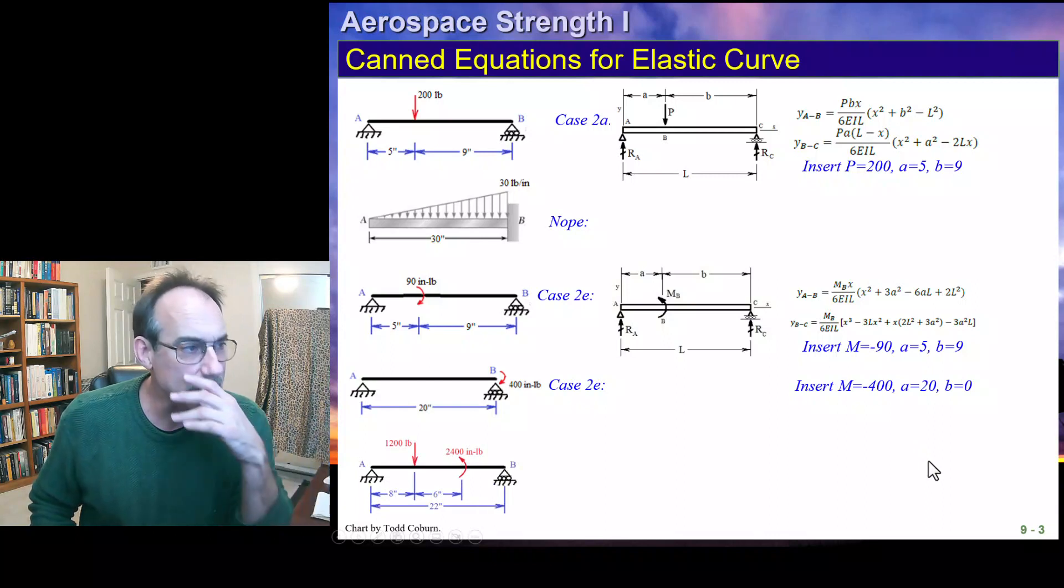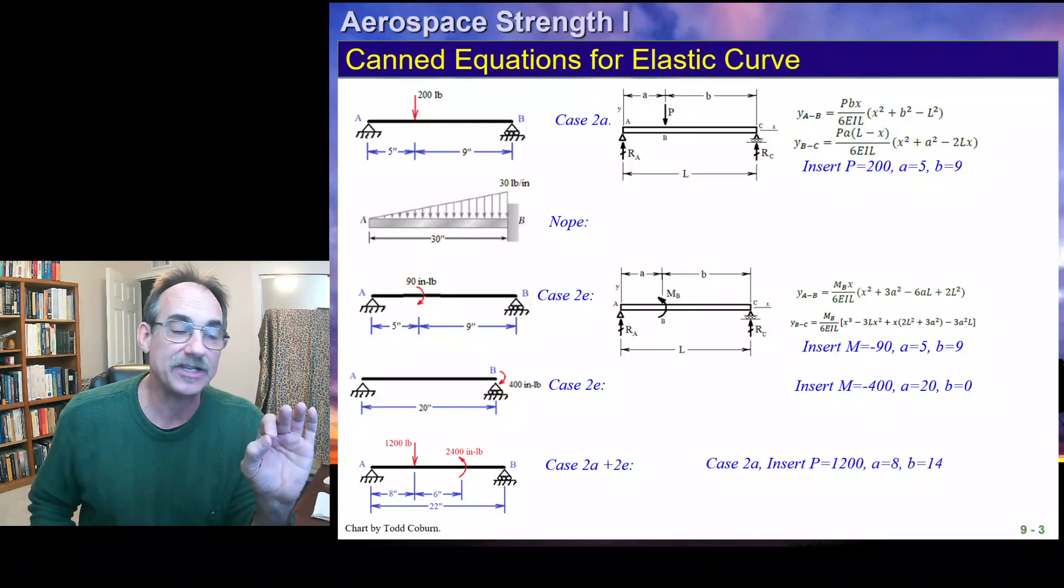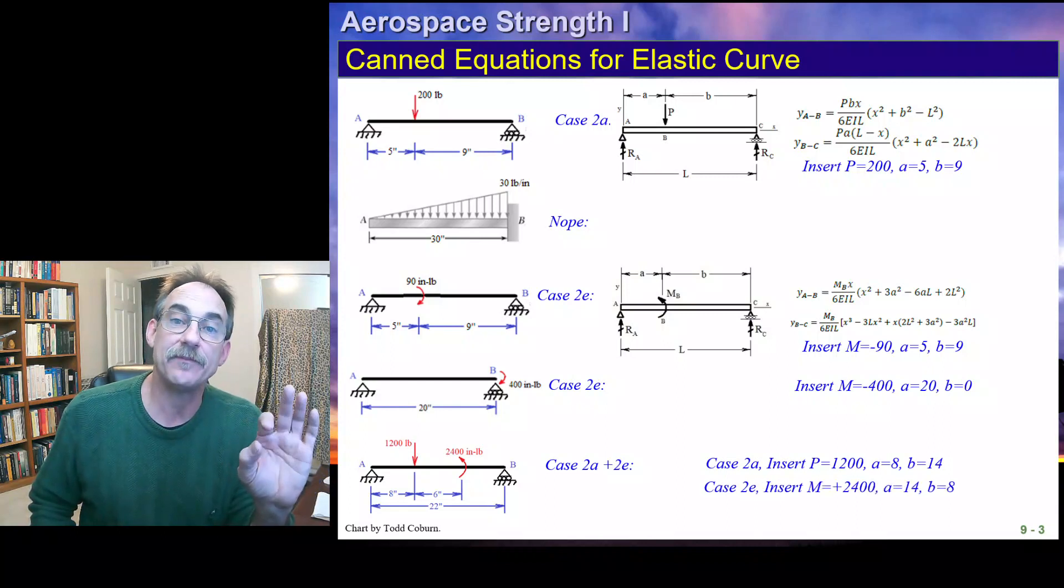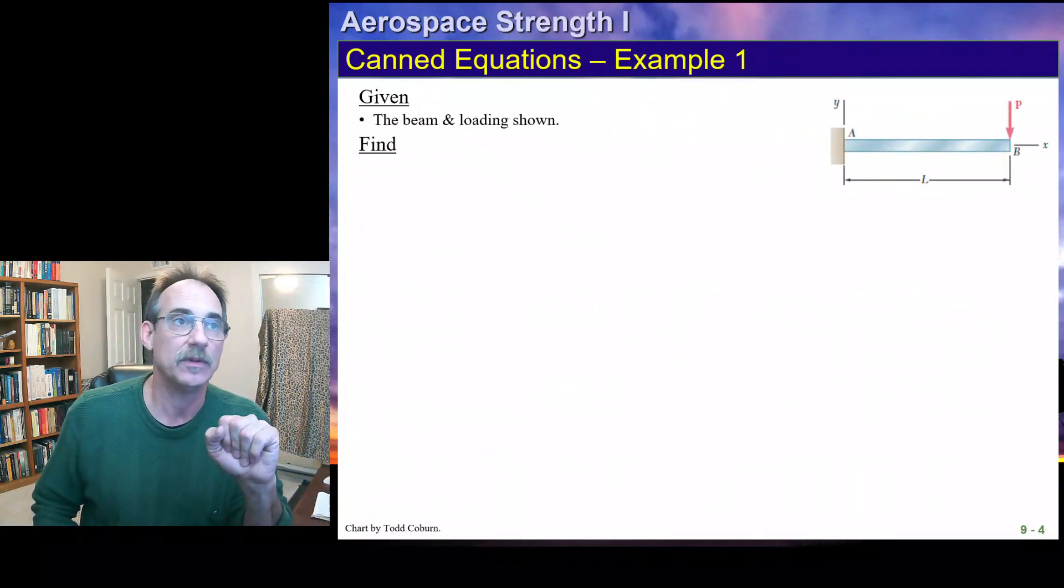If we see this case here, we say, well, there's no direct case, but we do have two cases that apply to pieces. We can use Case 2A with these inputs, and use Case 2E with these inputs, and then you just superimpose those two results to get the total deflection.